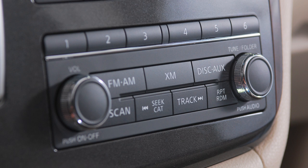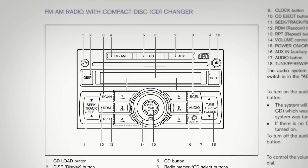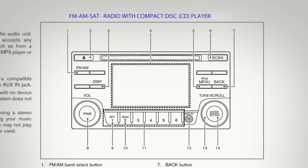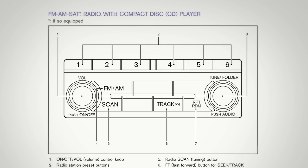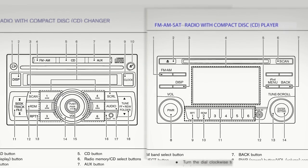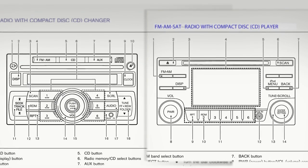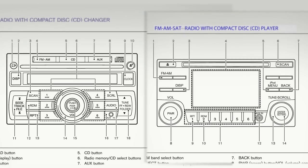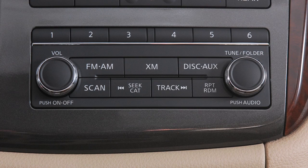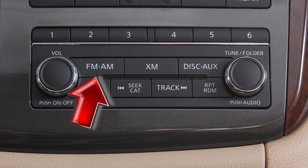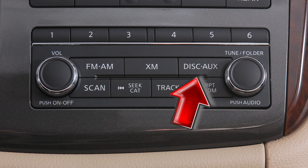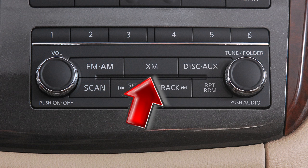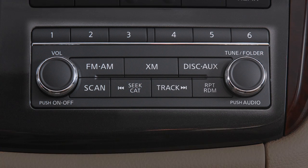Audio system with navigation, if so equipped. Your vehicle is equipped with one of these audio systems, which are configured differently but include similar functions. If your vehicle is equipped with any of these audio systems, please refer to the owner's manual for more information. The audio system with navigation includes an FM-AM radio, a CD player and XM satellite radio, if so equipped. This is the control panel.